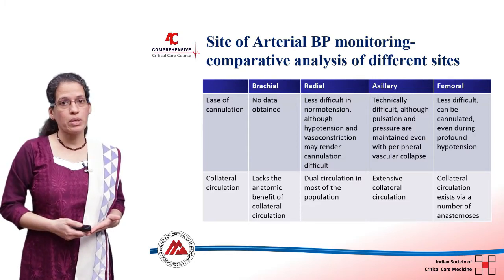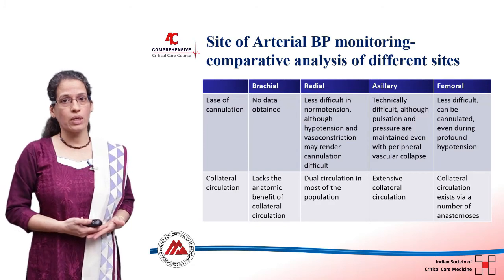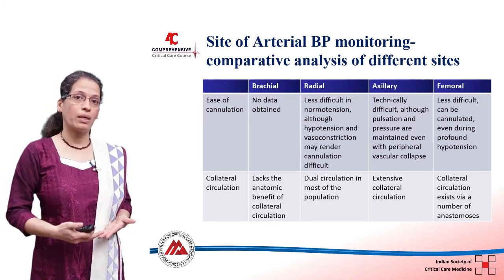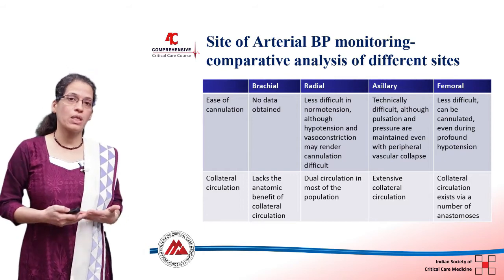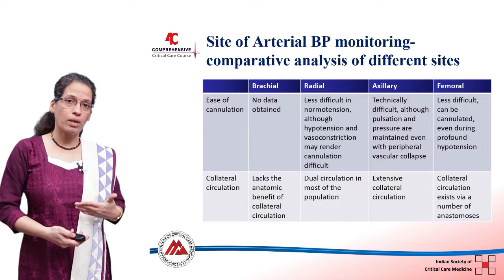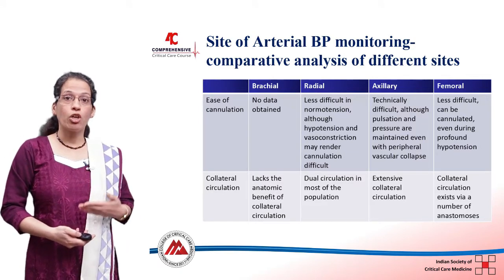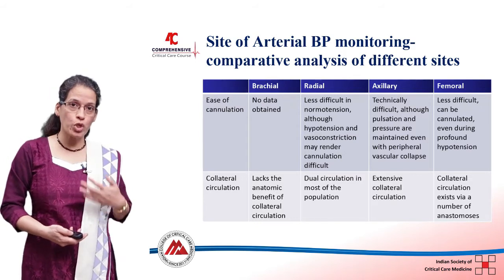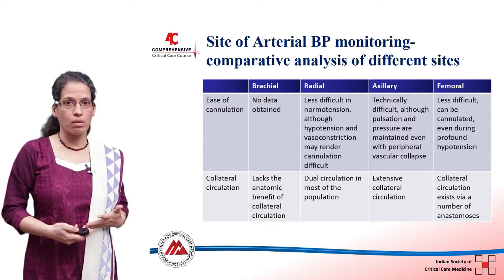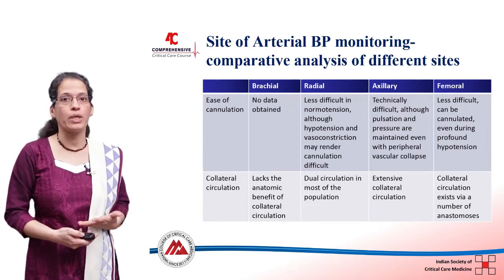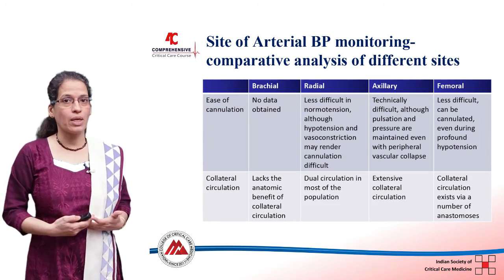Whenever we use any invasive technique, we look at two things: the success rate or ease of using that particular site, and the complication rate or potential problems. The most important consideration is safety. When we use arterial cannulation — placing a catheter inside an artery for continuous monitoring — we are obviously going to decrease or block flow through that artery. We must be sure that the distal portion supplied by that artery does not suffer from anoxia, meaning there must be good collateral circulation in case of any complication. The brachial artery, for example, does not have any collateral circulation, and that is why it is not preferred.